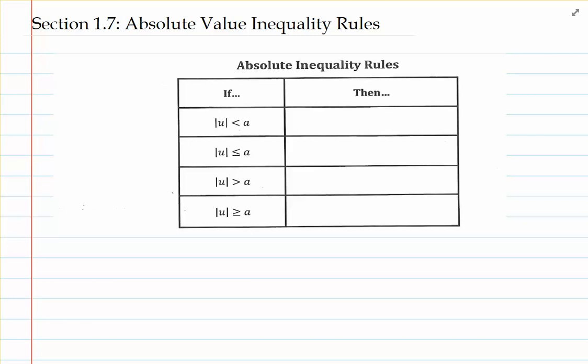This is a table that's on page 3 of the section 1.7 note packet. But right off the bat, I want to mention that there's a little bit of a typo here. It should say absolute value inequality rules. So if you want to go ahead and insert the word 'value' between 'absolute' and 'inequality,' go right ahead.